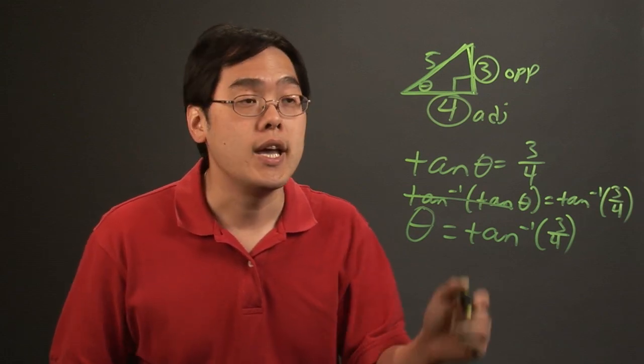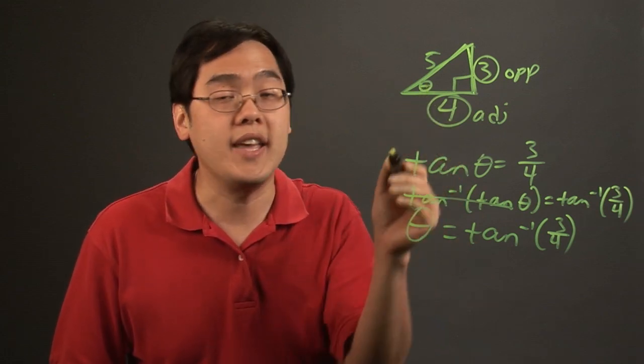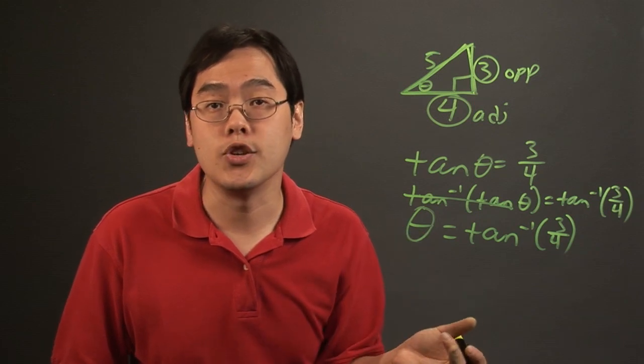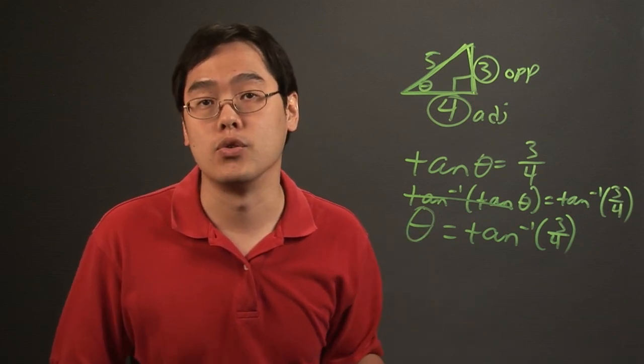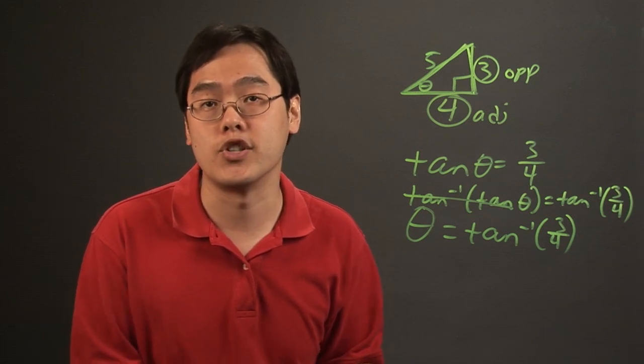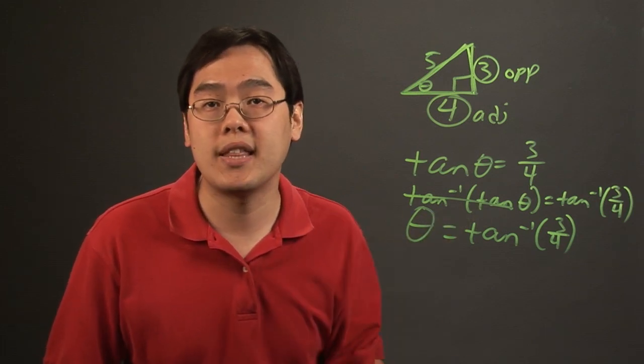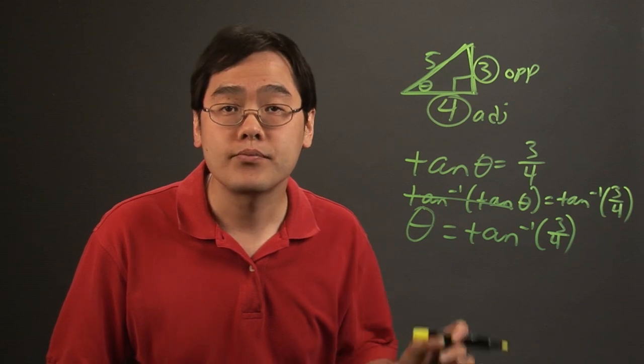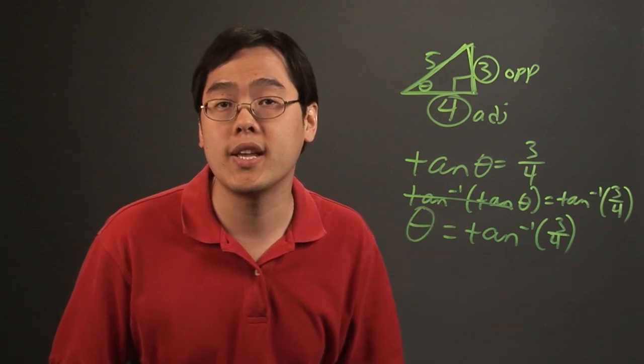But the bottom line is, if you want to find the angle when it's not given to you, you will have to use inverse trig functions—whether it be inverse sine, inverse cosine, or inverse tangent. So I'm Jimmy Chang, and that's how to find the angle of elevation without the degree given.